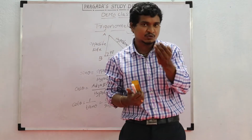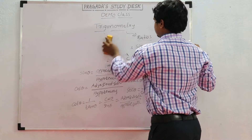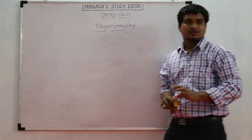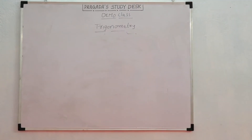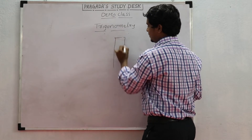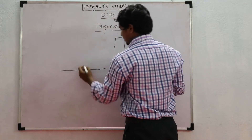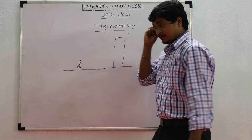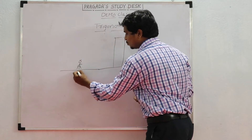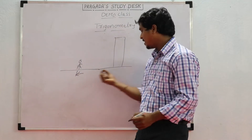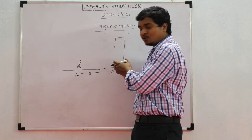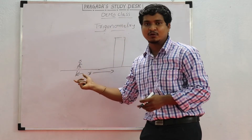How can you measure the height of a building? Suppose this is the building and a person is standing in front of it. He wants to measure the height of the building. First, he needs to know the distance between himself and the building — suppose that is x meters. The distance from the foot of the building to the person standing on the ground is x.